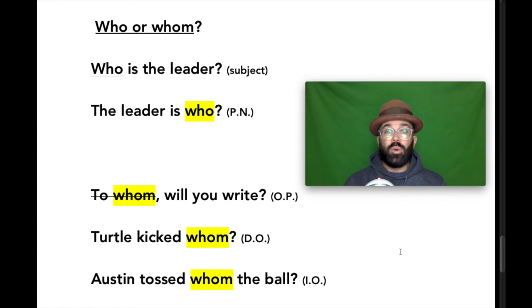So for example, who is the leader? In this instance, who is the subject of the sentence. And so who comes from the subjective pronoun list. Or you could reverse that and say the leader is who. And then once again, who comes from the subjective or the nominative pronoun list because it is the predicate nominative in this sentence.